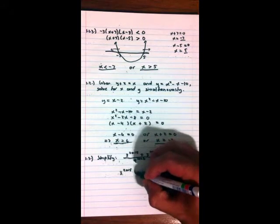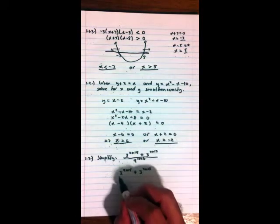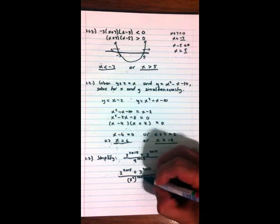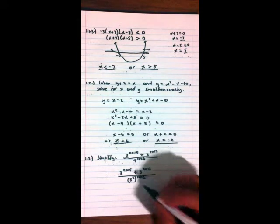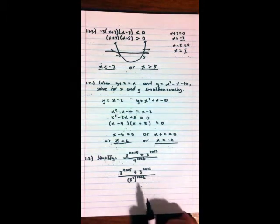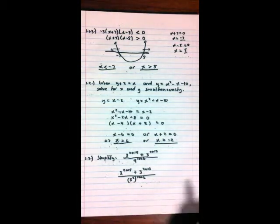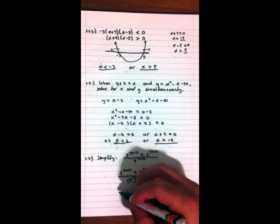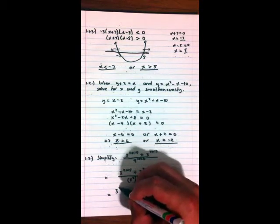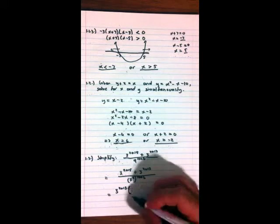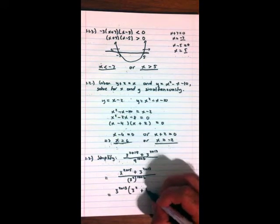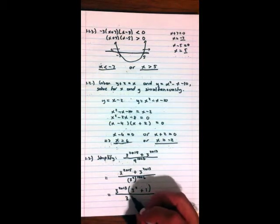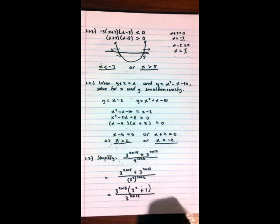3^2015, that's fine, plus 3 already prime to the power 2013, all over. Now, 9 can be written as 3², and that to the power 1006. Okay, what do we want to do now? We want to factorize at the top, because once we have it 1 term over 1 term, we can start canceling. The highest common factor at the top is 3^2013. Okay, so let's take that out. 3^2013. What are you left with here? You're left with 3² + 1. At the bottom, 3² to the power 1006 is the same as 3^2012.